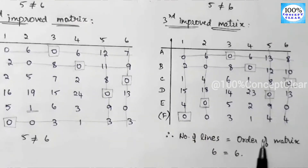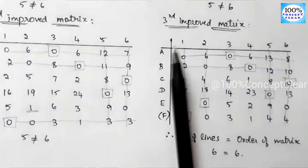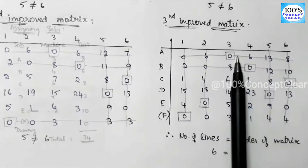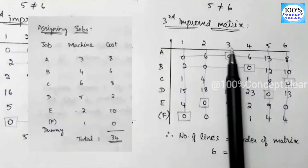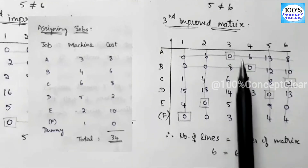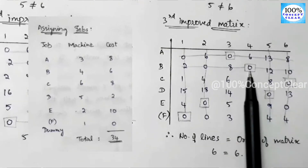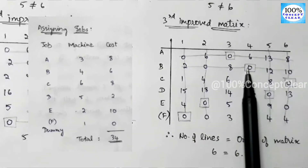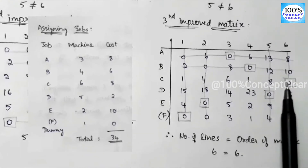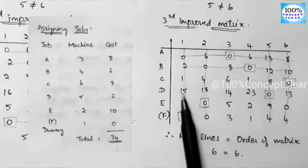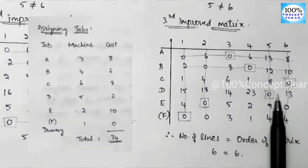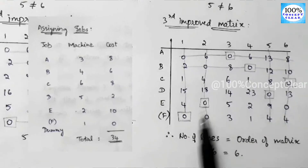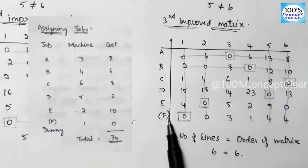Now we assign jobs. Job A is assigned to Machine 3. Job B is assigned to Machine 4. Job C is assigned to Machine 6. Job D is assigned to Machine 5. Job E is assigned to Machine 2. Job F (dummy row) is assigned to Machine 1.